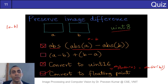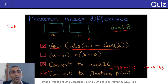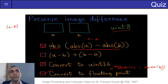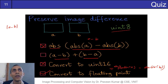So after taking the difference, if you take the absolute value, will that help? If you are doing A minus B in unsigned int 8, the negative difference will be clipped to 0. You will have only the positive difference — wherever A is greater than B it will preserve that information. Similarly, if you do B minus A, wherever B is greater than A it will preserve that information. So if you add both differences, you have effectively preserved both differences. So this will actually help.